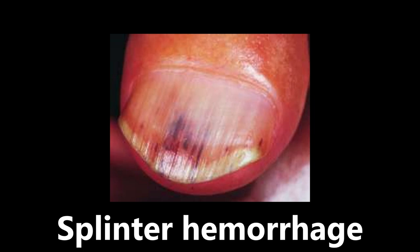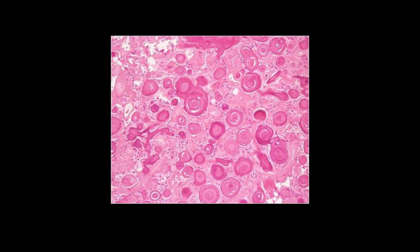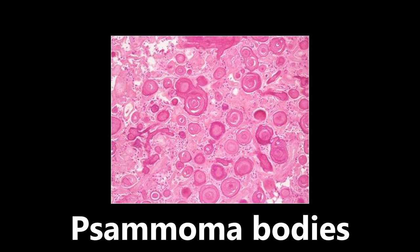More H&E stain here. We're seeing a lot of these whorl-appearing structures — these are psammoma bodies. They're basically microscopic collections of calcium. These are associated with several different conditions: meningiomas, papillary thyroid carcinoma, mesothelioma, papillary serous carcinoma of the endometrium, and the ovary. If you see this on H&E stain, think psammoma bodies. The classic association is meningioma, but know there are several other conditions as well.